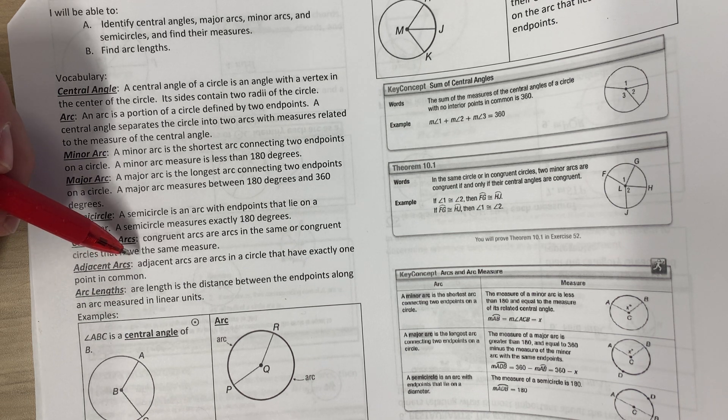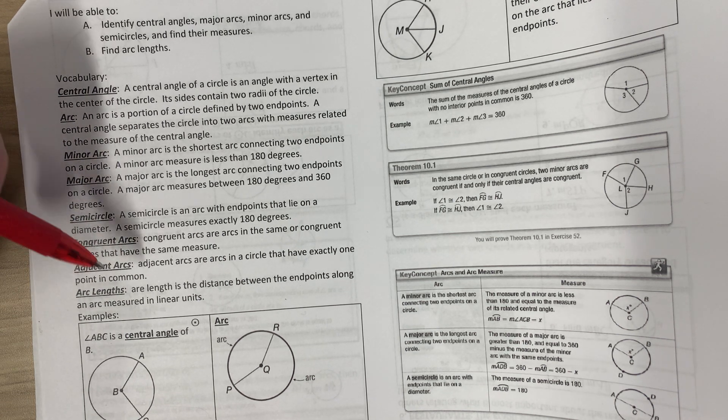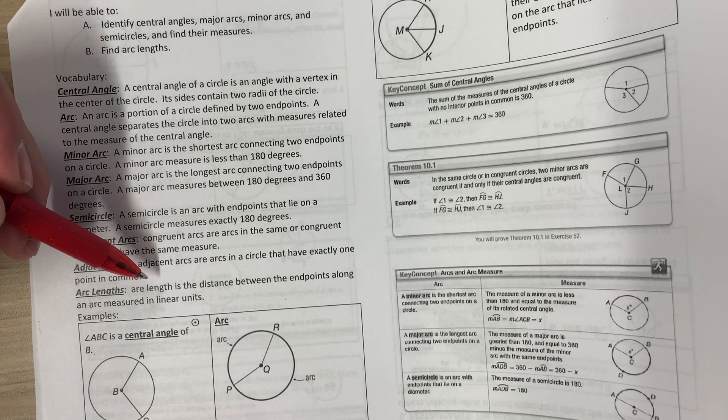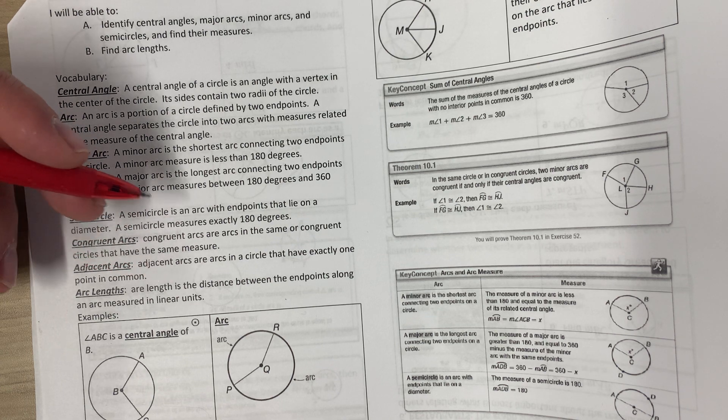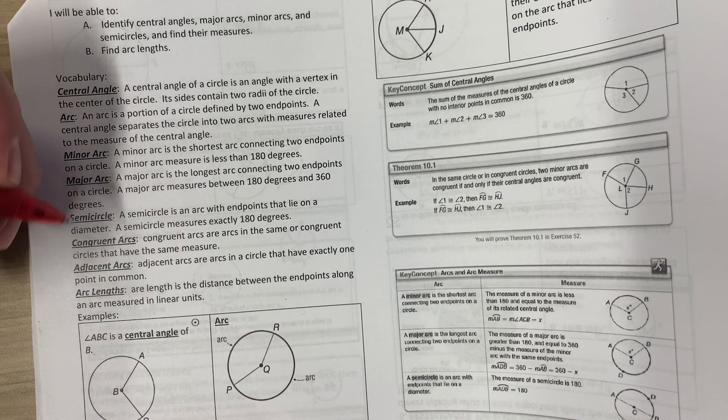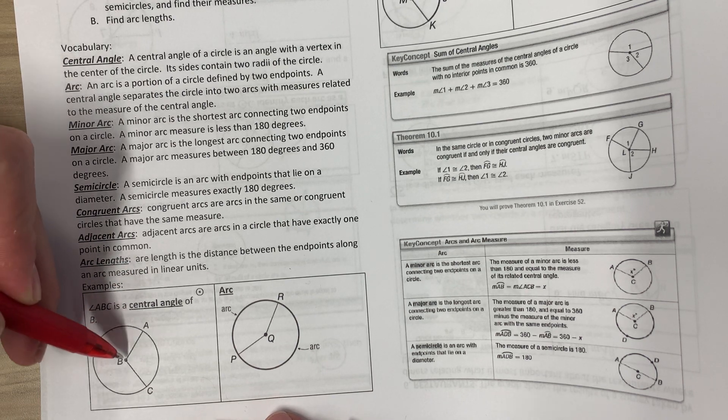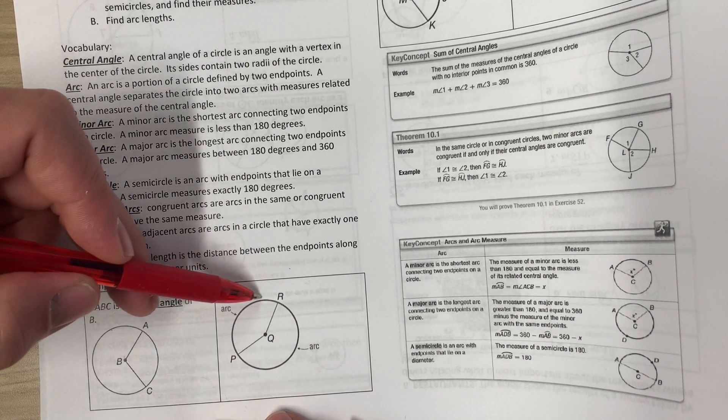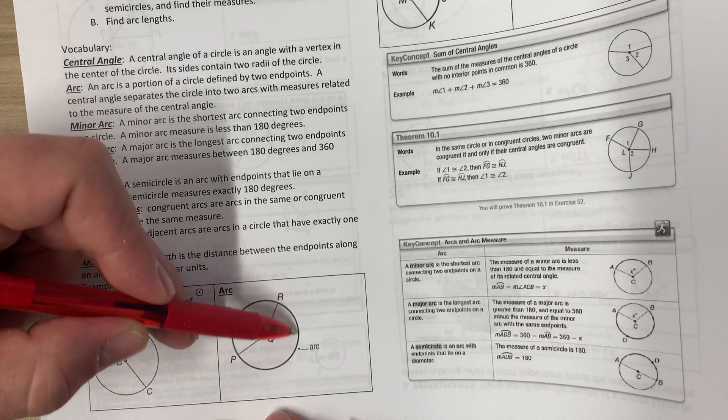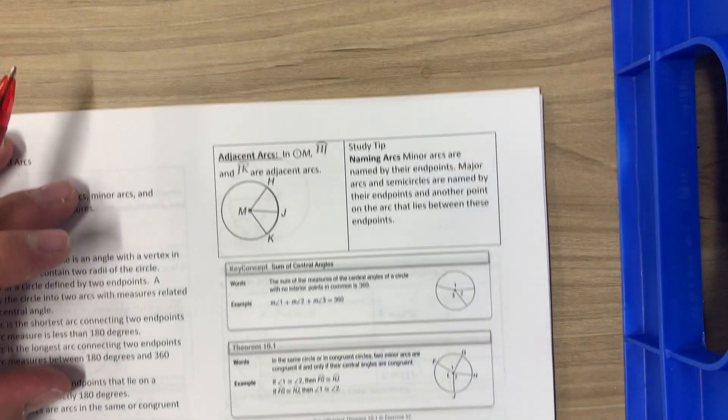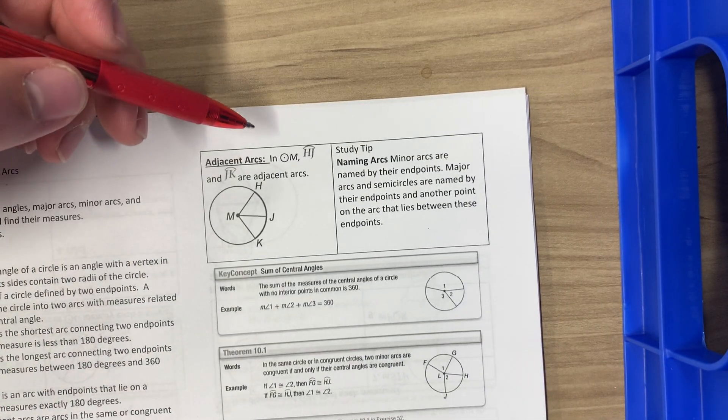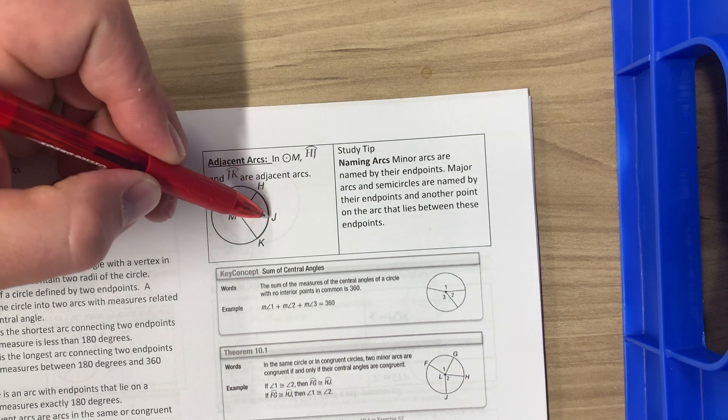Adjacent arcs are arcs in a circle that have exactly one point in common or are right next to each other. Arc length is the distance between two endpoints along an arc measured in linear units. So angle ABC is a central angle here because you have B in the center. This is an arc. This is another arc. And here's another example of the adjacent arcs would be HJ and JK.